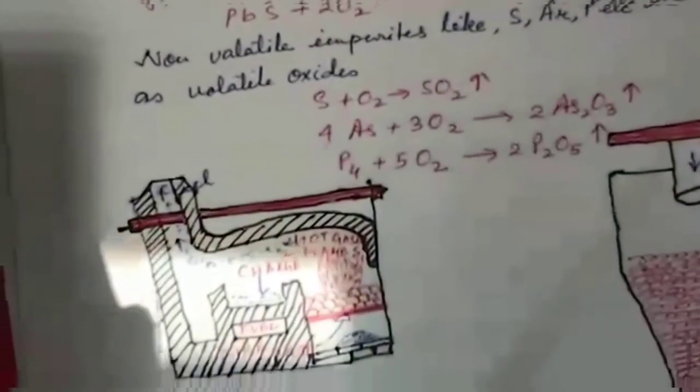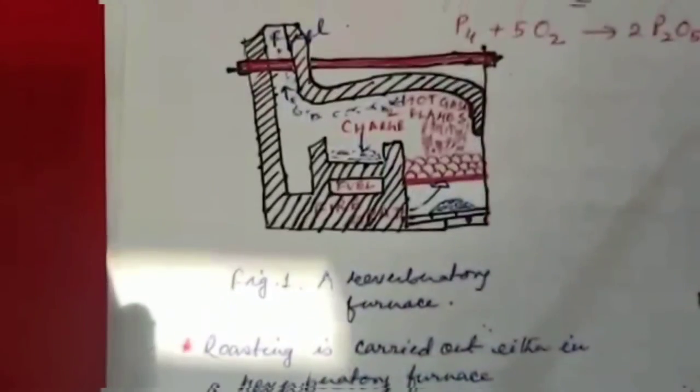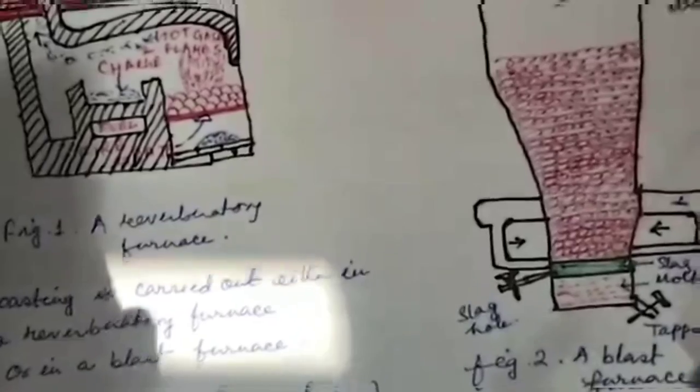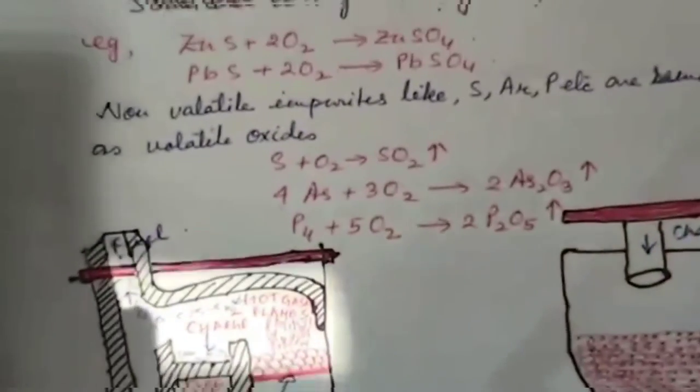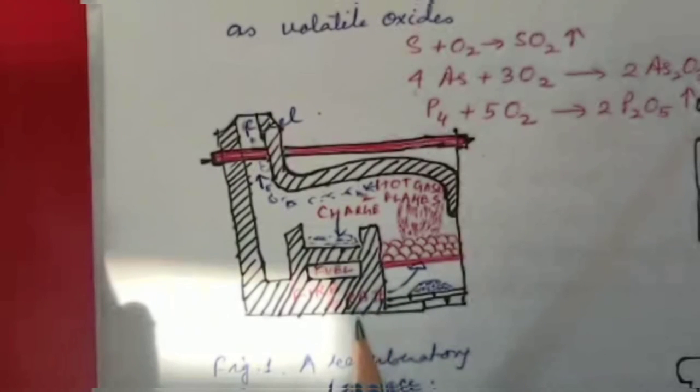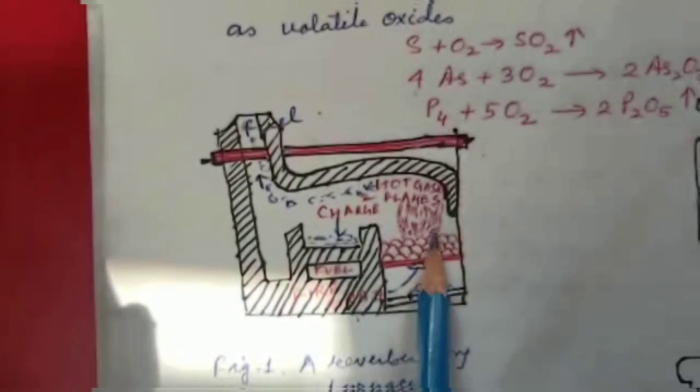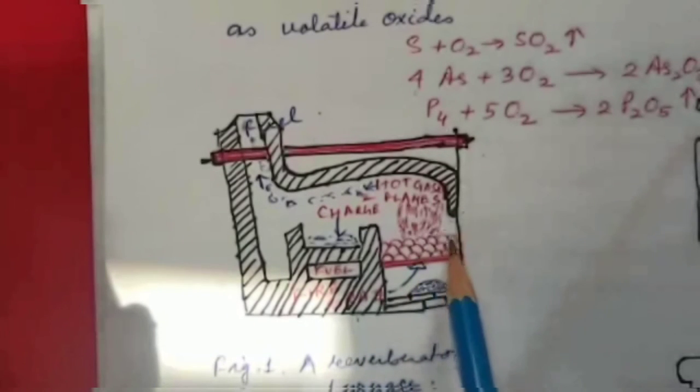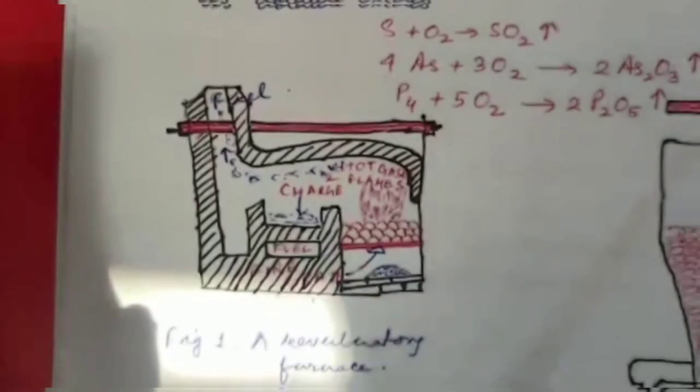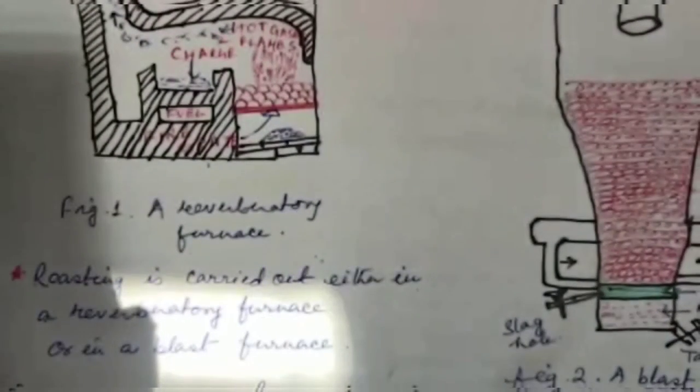Roasting is carried out either in a reverberatory furnace or in a blast furnace. In a reverberatory furnace, the charge is placed on the hearth and heated by the flames deflected from its roof. Reverberatory furnace is used in treating the ores of copper, tin, lead, etc.